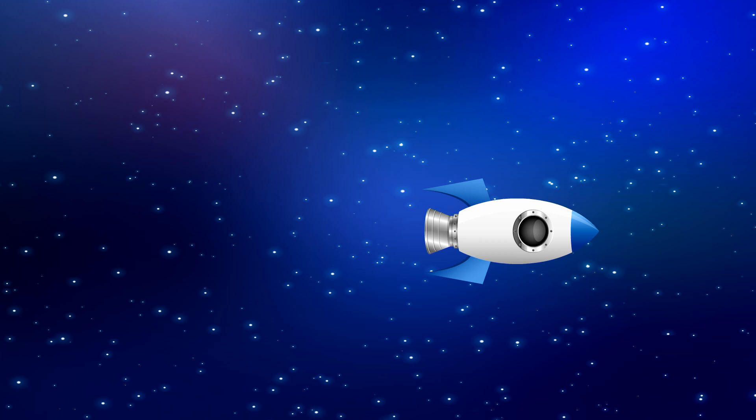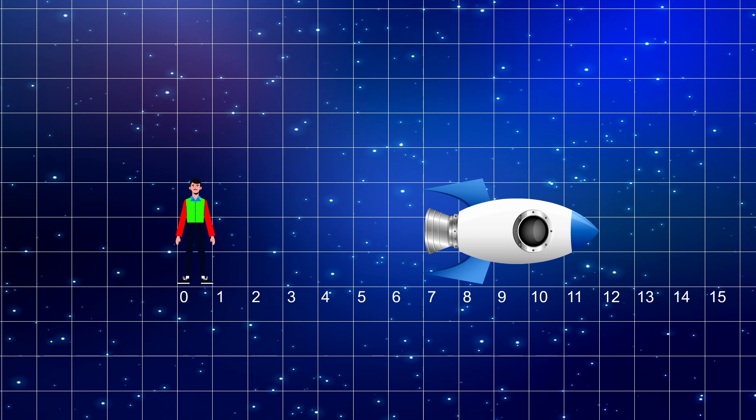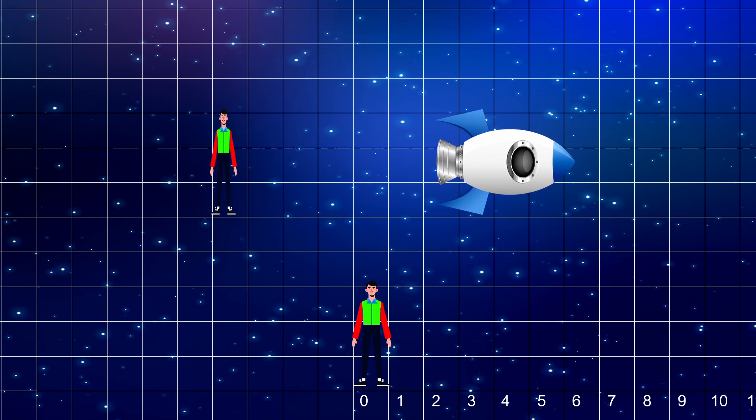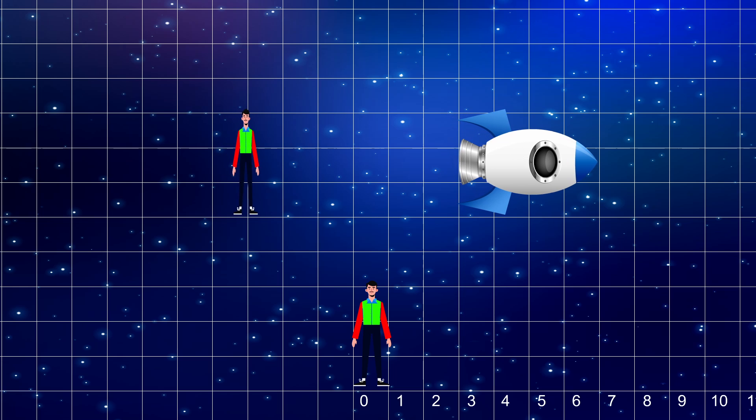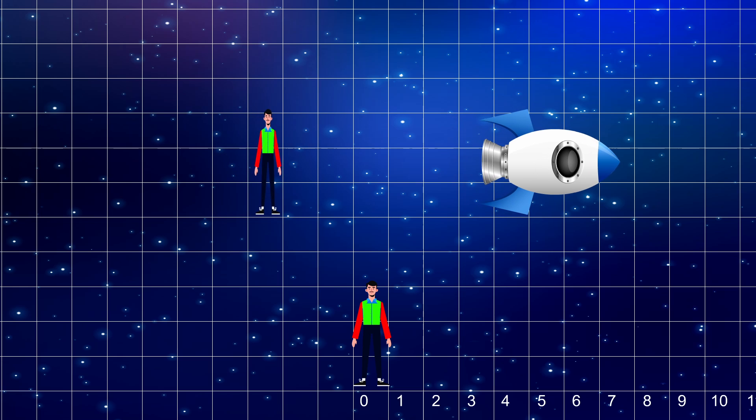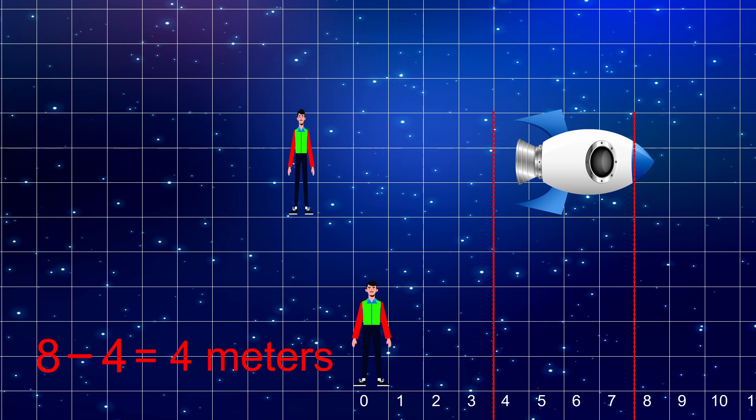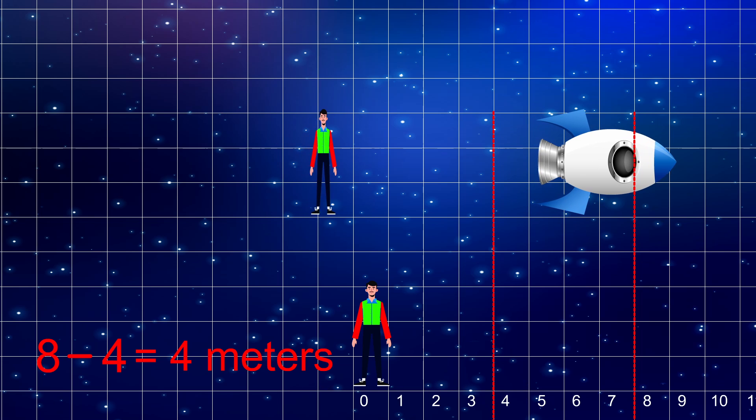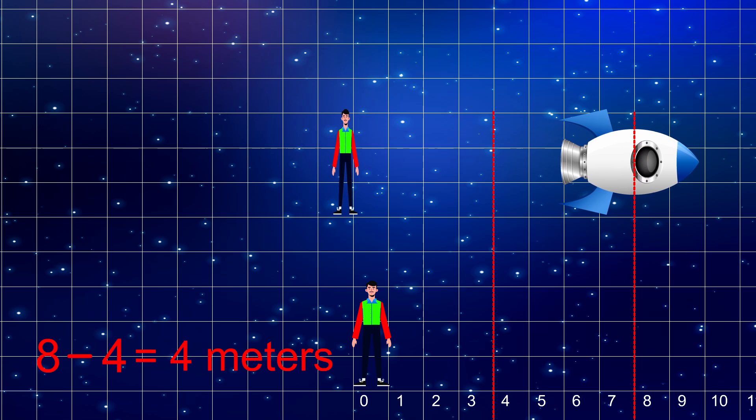To give you some practical example, imagine you have a ship and you are at rest relative to this ship, and you measure its length to be 5 meters. Now imagine an observer moving relative to this ship and he wants to measure the length of the ship, so he measures the positions of front and back end of the ship simultaneously and subtracts them.